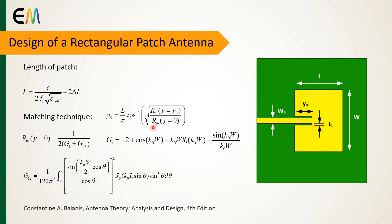Here, R_in at zero is the input resistance of the patch and R_in at y0 is the input resistance for the inset feed, which is usually equal to 50 ohms. The input resistance of the patch consists of two components G1 and G12, where the plus and minus signs are used for modes with even and odd resonant voltage distribution. In this design I consider the plus sign.